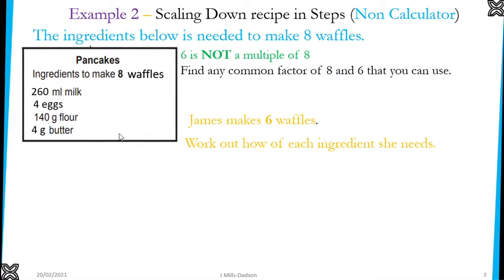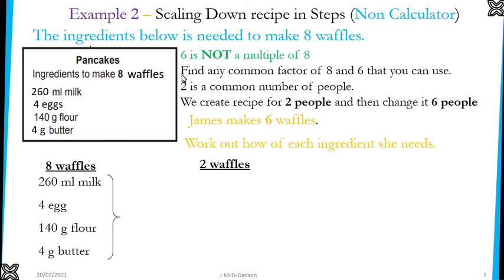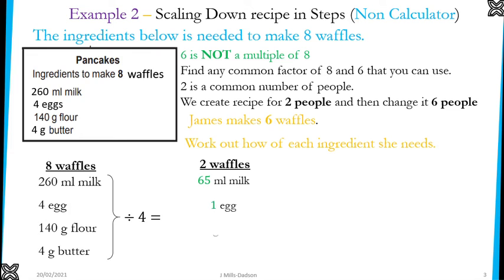We have to understand that 6 is also not a multiple of 8, so we cannot just change 8 into 6. We need a common number for 8 and 6, and that common number will be 2. So we can create a recipe for 2 waffles, then from 2 waffles change it into 6. If you say 2 waffles, ask yourself: how do you change 8 to become 2? By dividing it by 4. So you need to divide each of these ingredients by 4.